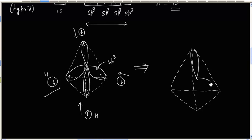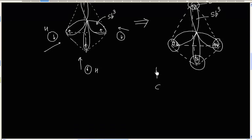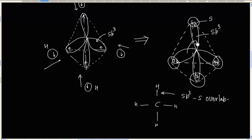So we have sp3 hybrid orbitals, and we have overlap of carbon sp3 with hydrogen s orbital at each bond. Each overlap will have 2 electrons with opposite spins. This is an sp3-s overlap. The bond angle is around 109 degrees, which is the bond angle of a tetrahedron.